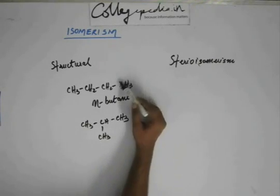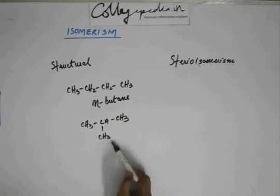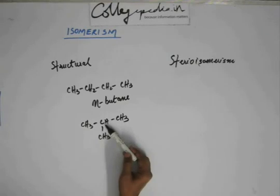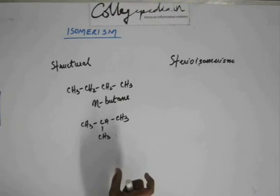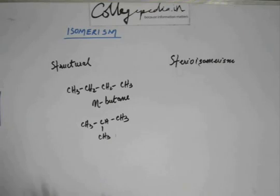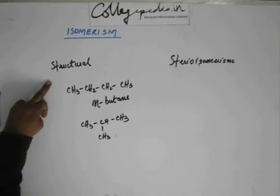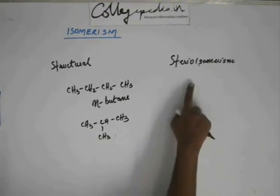They are isomers, and the key point is that connectivity has been changed. This methyl group, which previously was attached to a secondary carbon, is now attached to a tertiary carbon. So which atom is attached to which atom has changed. If that changes, it lies in the category of structural isomerism.